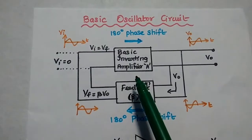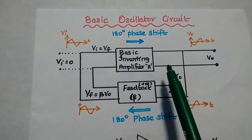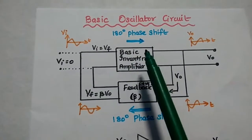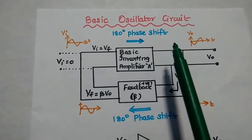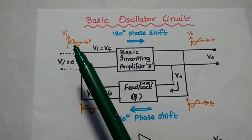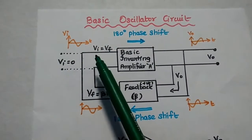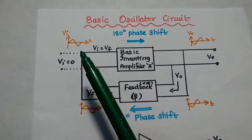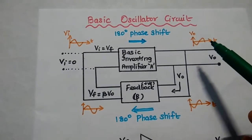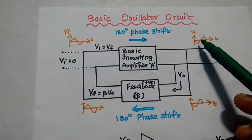This output signal is given as input to the feedback network, and we can get the feedback signal VF, which is then given as input to the basic inverting amplifier. The feedback signal drives the amplifier circuit. The inverting amplifier produces a 180 degree phase shift. If we give an input signal — we can assume there is a fictitious input signal — we can imagine it starts from positive, and obviously we get the 180 degree phase shifted output VO, which starts from the negative side.